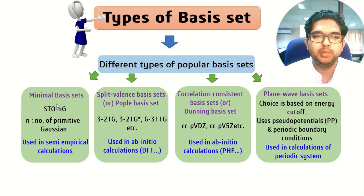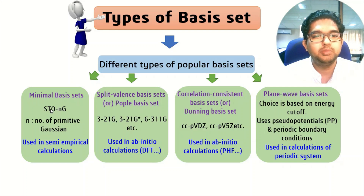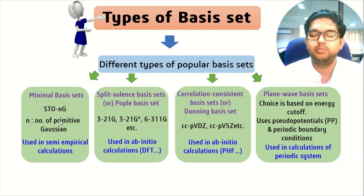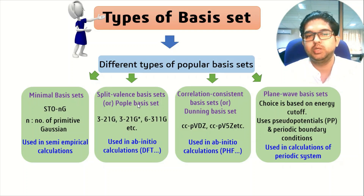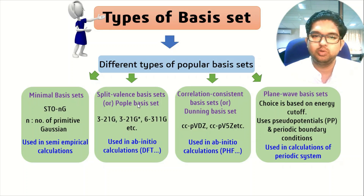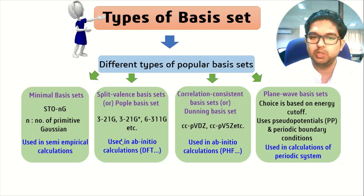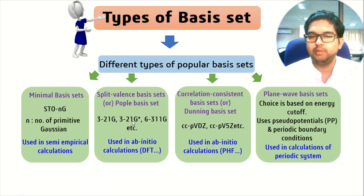First, we will take the minimal basis set. The minimal basis set is STO-nG, where n is the number of primitive Gaussians used for semi-empirical calculations. The split valence basis set was given by Pople, also known as the Pople basis set, where we use split valence orbitals. This is used in modern ab initio calculations like DFT and others.